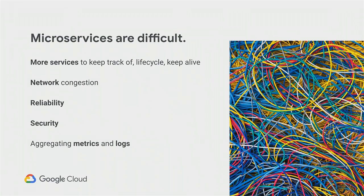This slide may be familiar to a lot of you. When you move from a monolithic application into microservices, a lot of challenges can arise. When you start decoupling your code into different languages, frameworks, and services, it can be tough to keep track of everything — things like service discovery, network congestion, reliability, security, and aggregating metrics and logs.